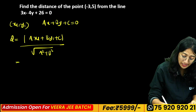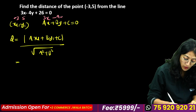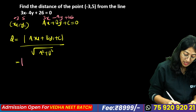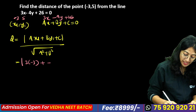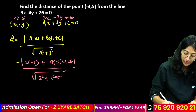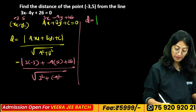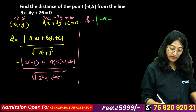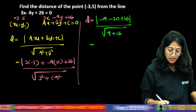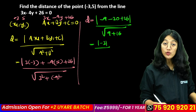For example, the point is (–3, 5) and the line is 3x – 4y + 26 = 0. Distance equals modulus of (3×(–3) + (–4)×5 + 26) divided by root of (3² + (–4)²). That is modulus of (–9 – 20 + 26) divided by root of (9 + 16), which is modulus of (–3) divided by 5, equal to 3/5 units.